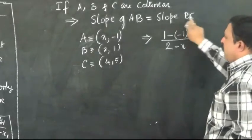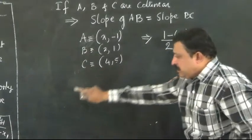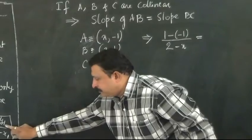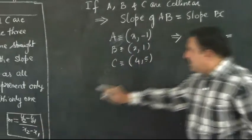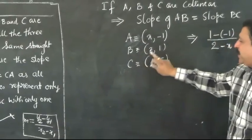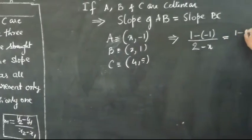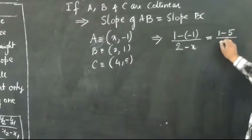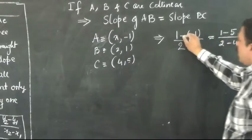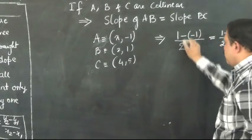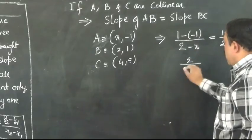Should be equal to slope of BC. Now use the slope formula between points B and C. You can take x1, y1, x2, y2 - that is 1 minus 5 divided by 2 minus 4.